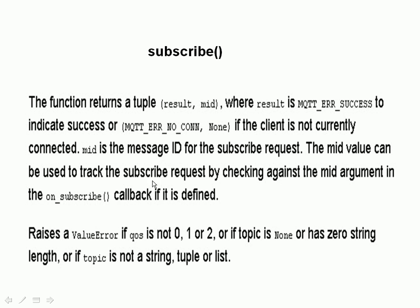The mid value can be used to track the subscribe request against the mid argument in the on_subscribe callback if defined. The on_subscribe callback isn't mandatory but it is a good idea to check the subscription. If the subscribe call fails with an exception, it generates a ValueError — for example, if you've supplied an invalid quality of service (not zero, one, or two) or an invalid topic name. In the Python script we'll take care of that by enclosing the subscribe in a try/except block.